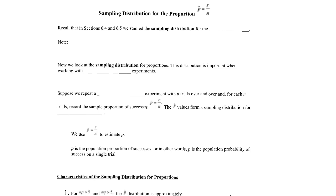Before we look at section 7.3, we need to talk about sampling distributions for proportions. This is actually covered in our book in chapter 6.6, but we don't actually use it until chapter 7. So just to recall, in section 6.4 and 6.5, we studied sampling distribution for the mean x-bar.